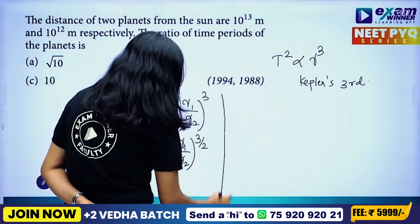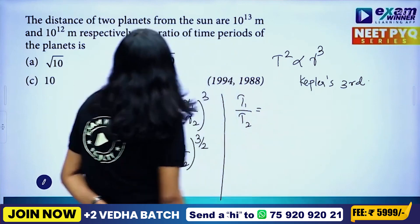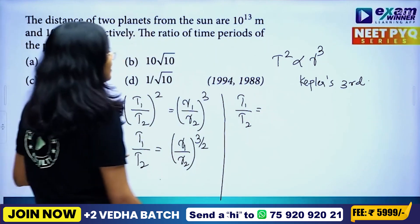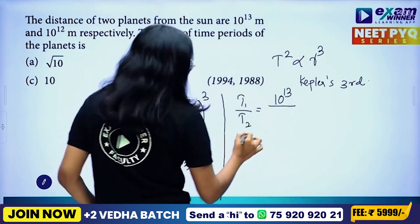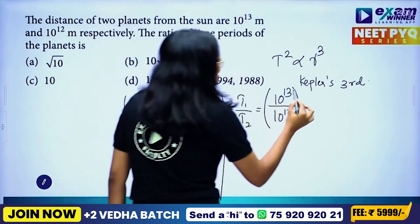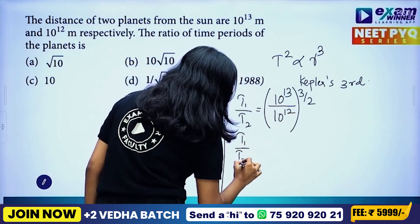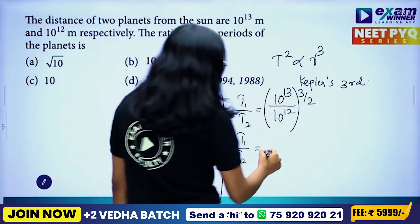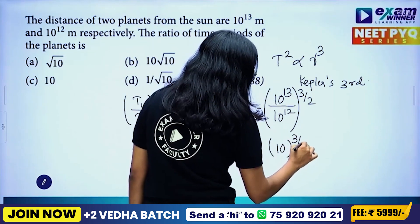That is, T1 by T2 equal to the ratio of distances of the two planets. T1 by T2 equals 10 raise to 13 by 10 raise to 12, whole raise to 3 by 2. That is, 10 whole raise to 3 by 2.